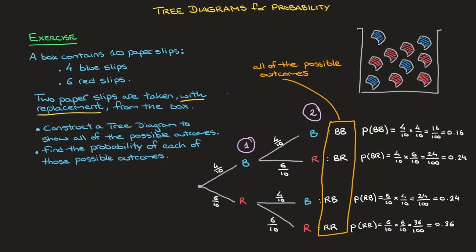We're done — we've now drawn a tree diagram showing all of the possible outcomes of the experiment as well as their corresponding probabilities. With this tree diagram, we can now answer questions about probabilities for this experiment. For simple probabilities, we already have everything listed in front of us. For instance, the probability of picking two blue paper slips in a row corresponds to the outcome BB, so the probability is 0.16. Or the probability of not picking any blue slips at all corresponds to the outcome RR, for which the probability is 0.36.